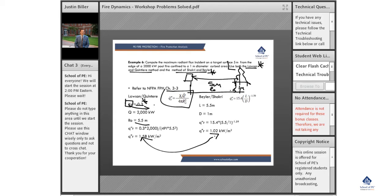So working this out using the Lawson-Quinteri method, we get 1.58 kilowatts per square meter.